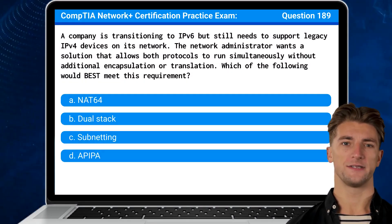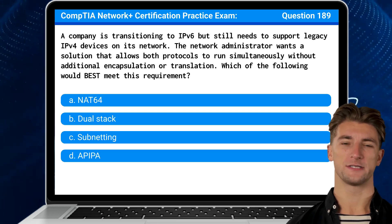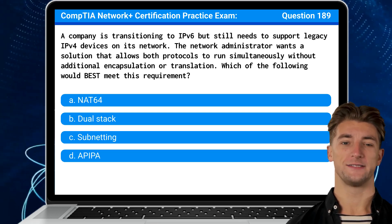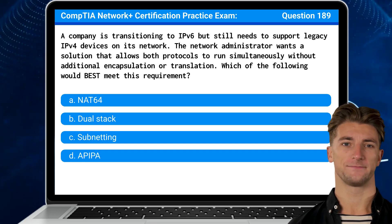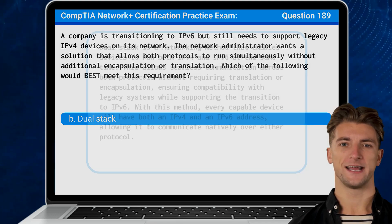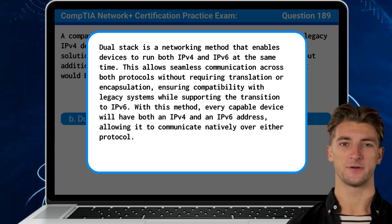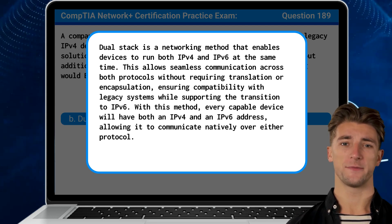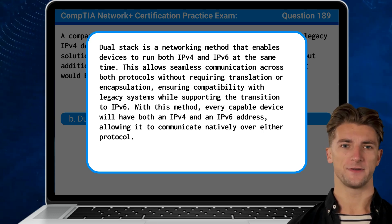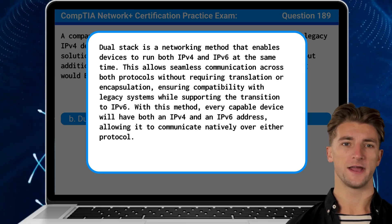Question 189: A company is transitioning to IPv6 but still needs to support legacy IPv4 devices on its network. The network administrator wants a solution that allows both protocols to run simultaneously without additional encapsulation or translation. Which of the following would best meet this requirement? The answer is B, dual-stack. Dual-stack is a networking method that enables devices to run both IPv4 and IPv6 at the same time, allowing seamless communication across both protocols without requiring translation or encapsulation. With this method, every capable device will have both an IPv4 and IPv6 address, allowing it to communicate natively over either protocol.